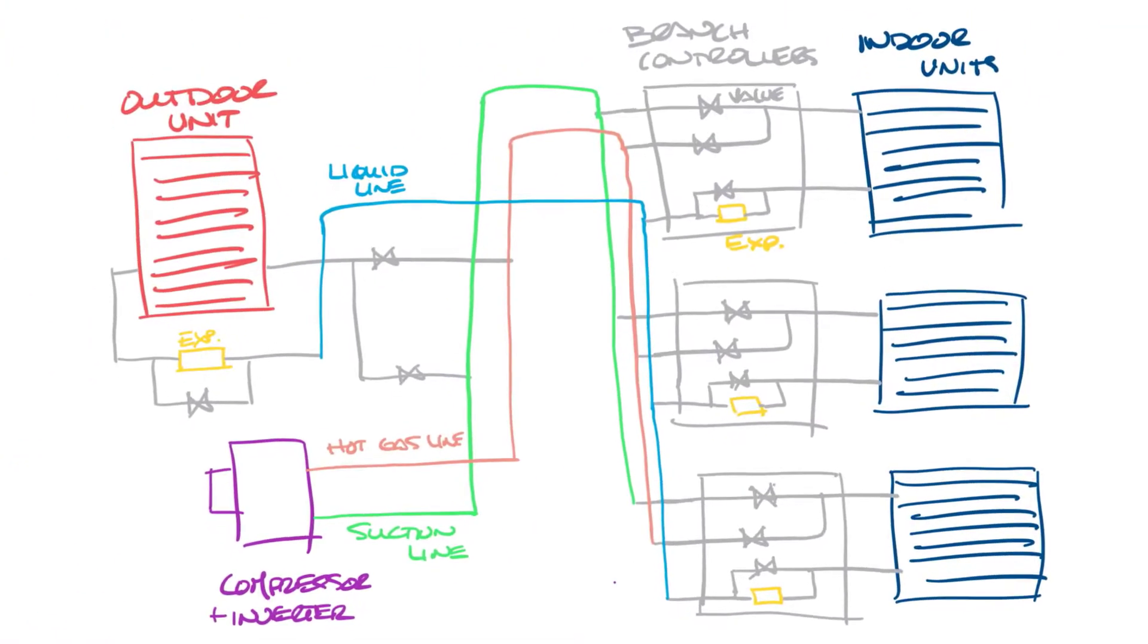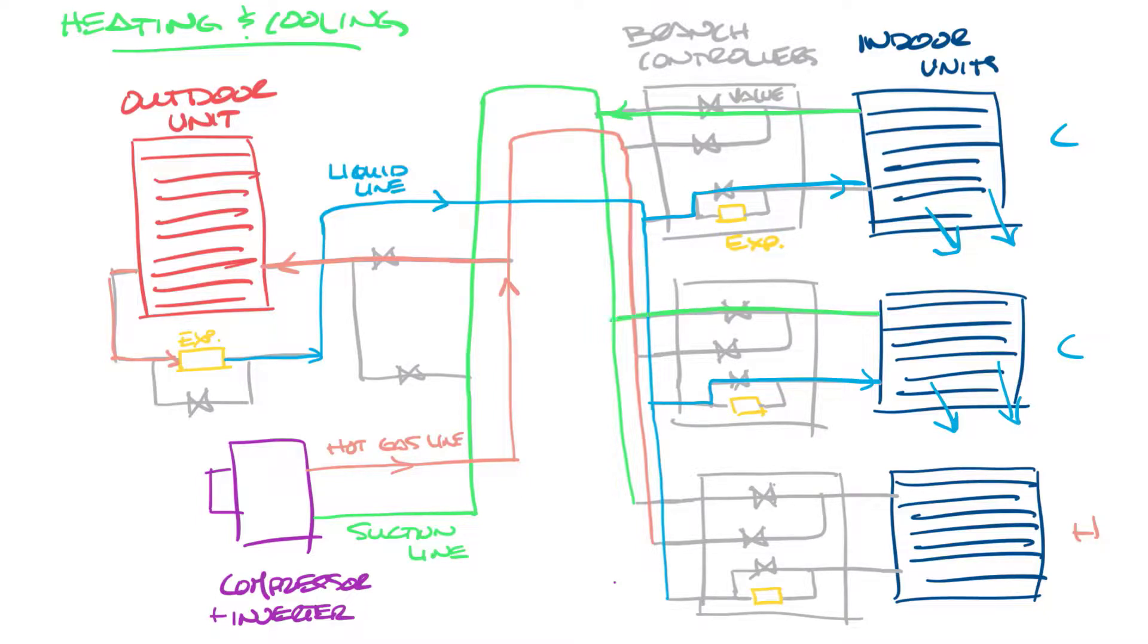But you can also heat some units and cool other units with a VRF system. So let's look at that. Let's say these top two units want cooling and the bottom one wants heating. Starting at the compressor, out the hot gas line, let's look at the cooling units first. So it's going to come in to the outdoor unit. Heat will be rejected. It'll go through the expansion device, be cooled down and flow into the two units that want cooling through the liquid line. And these spaces are cooled. It comes out of these two units, goes back to the suction line, and flows back into the compressor.